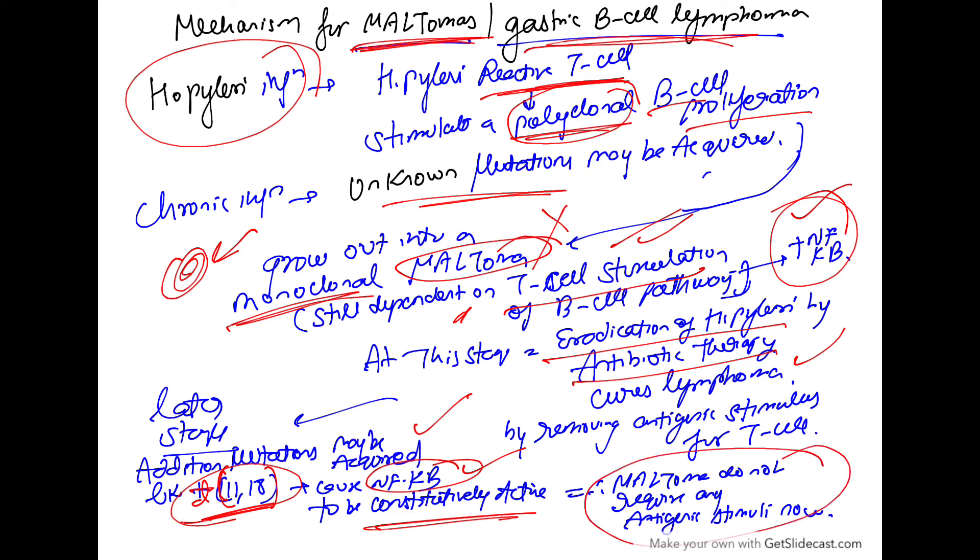So, MALToma will require no antigenic stimuli. Now, it is uncurable. So, it will lead to MALTomas. So, these are the two step mechanism in MALTomas.